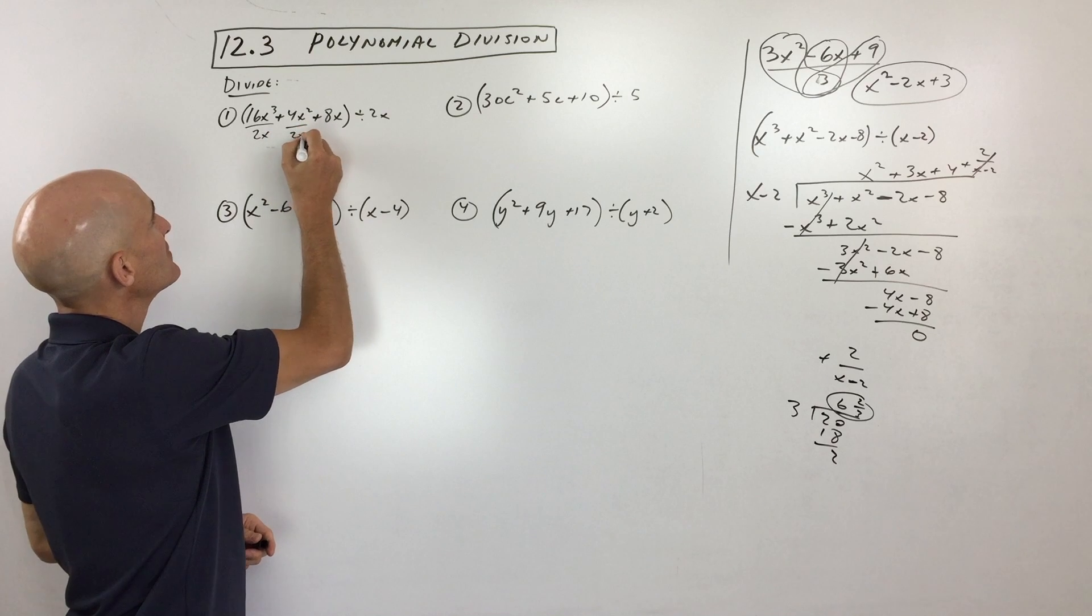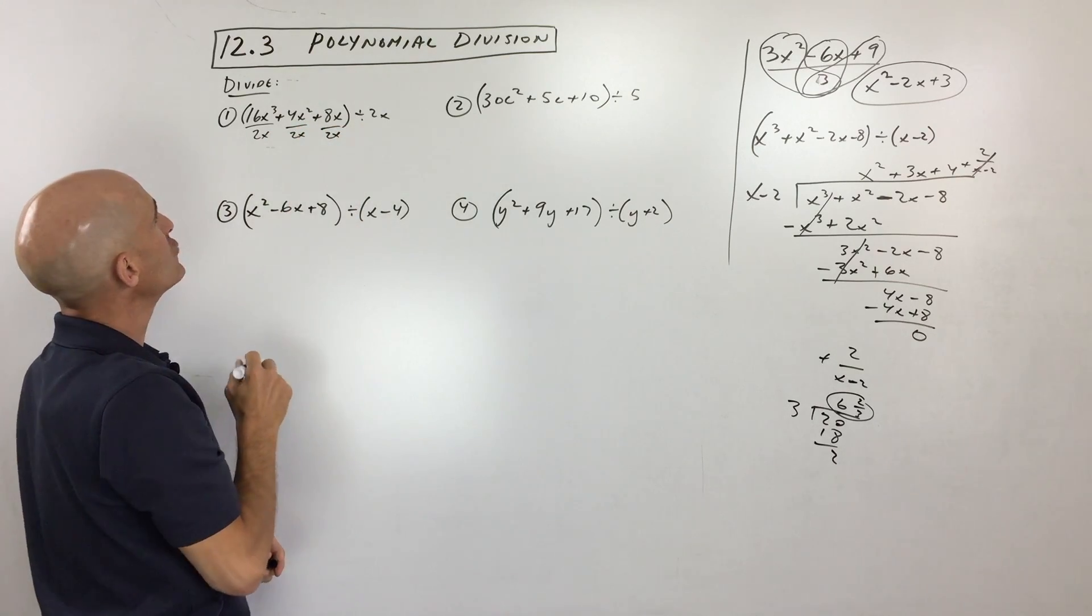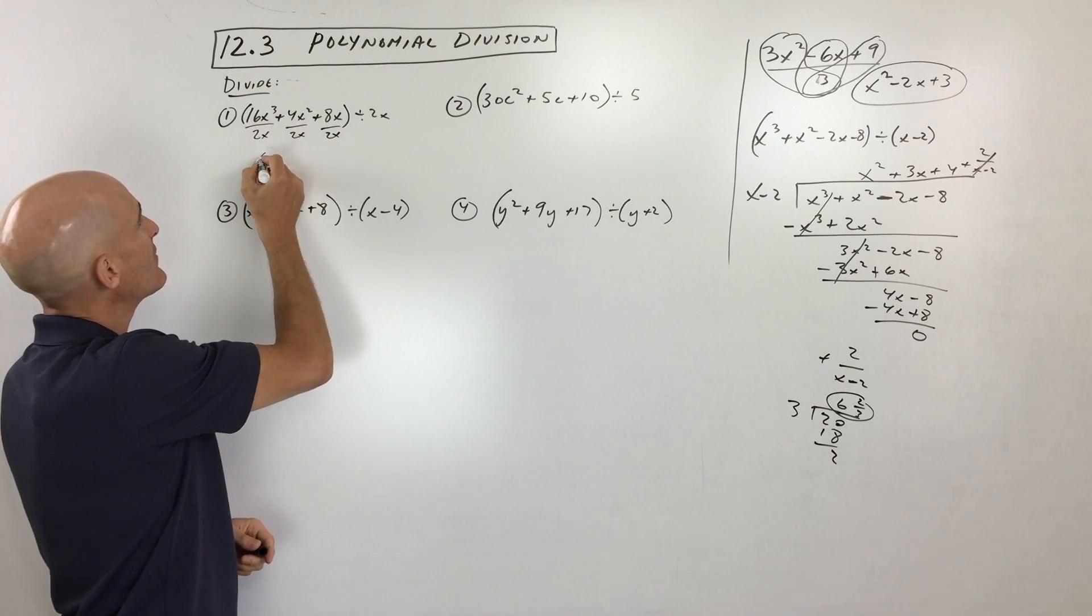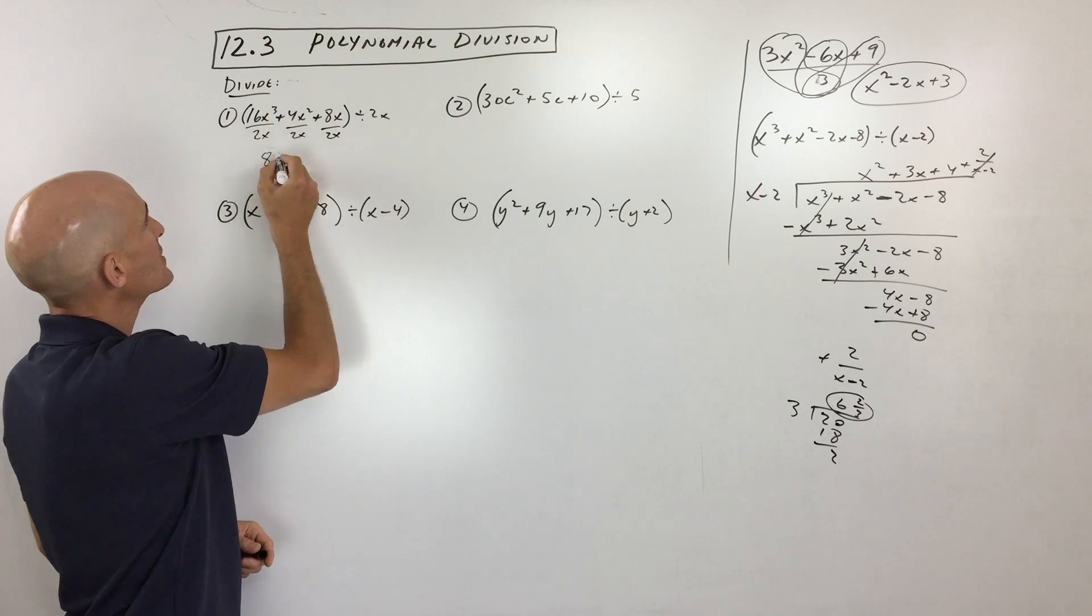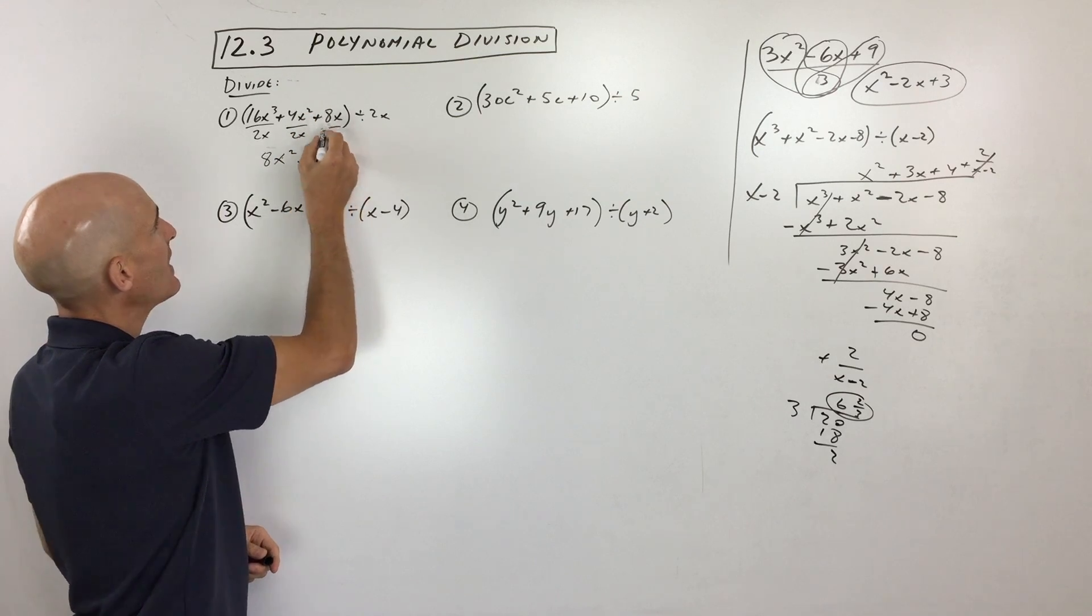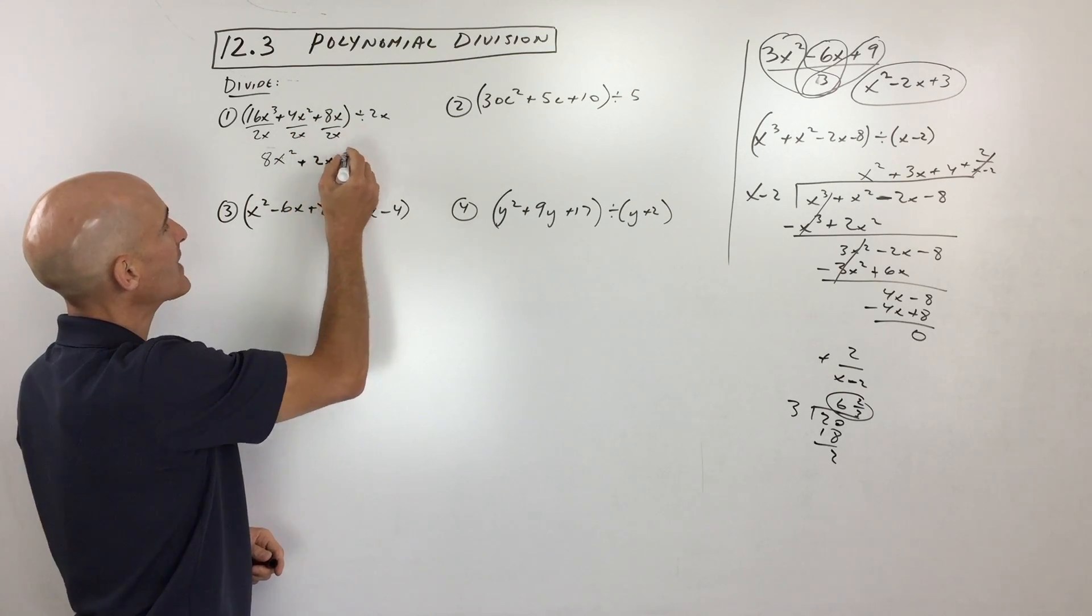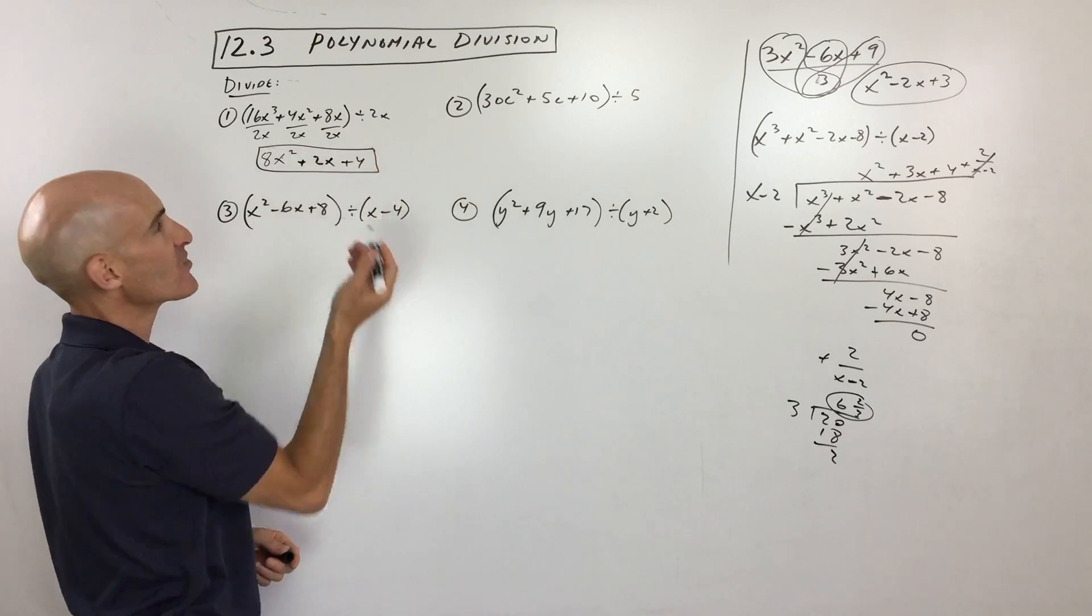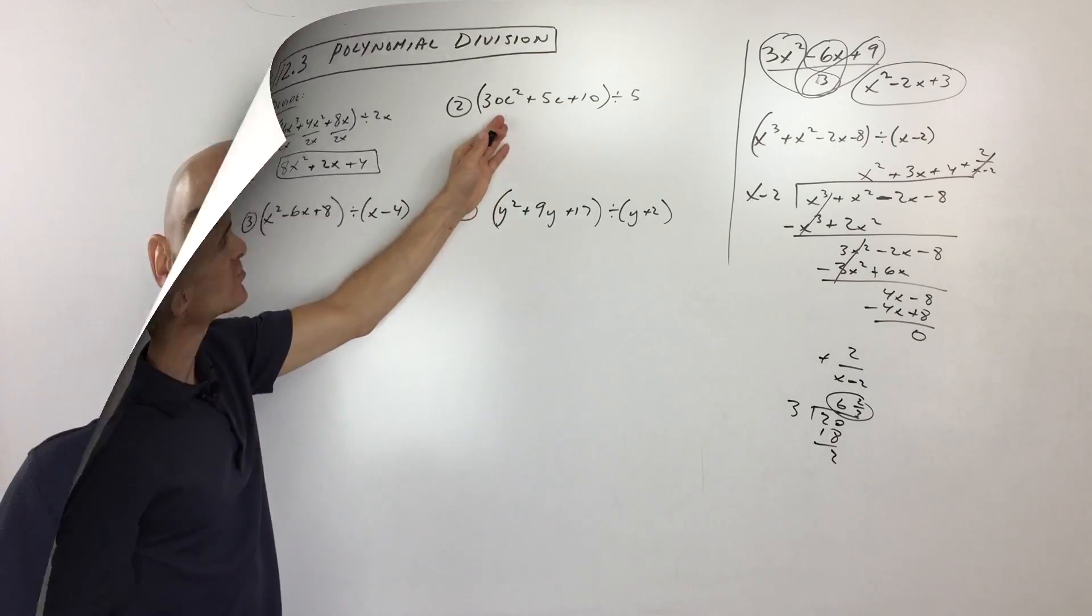That's really like dividing each of these terms by 2x. So you can reduce. 16 divided by 2 is 8. 3 minus 1 is x squared. 4 divided by 2 is 2. 2 minus 1 is x. 8 divided by 2 is 4. And the x's cancel. And that's your answer. So pretty easy, right? So try this one over here.